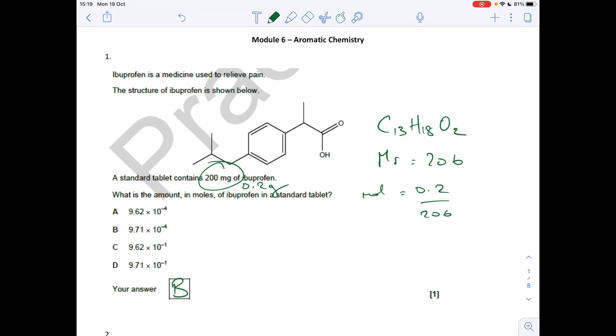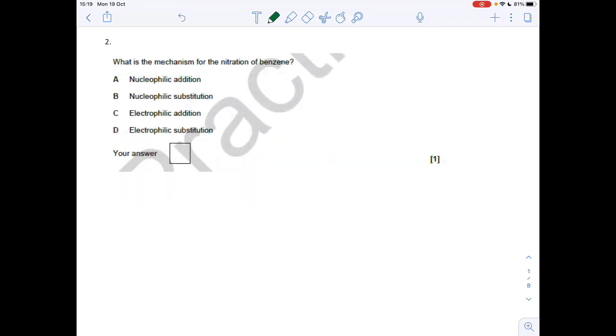which is option B. Next question, the mechanism for the nitration of benzene, electrophilic substitution, so option D.